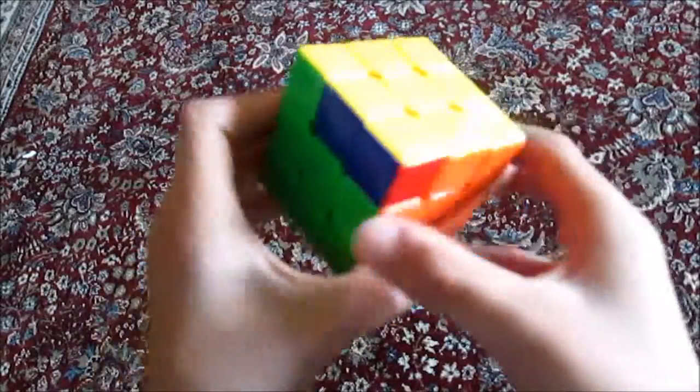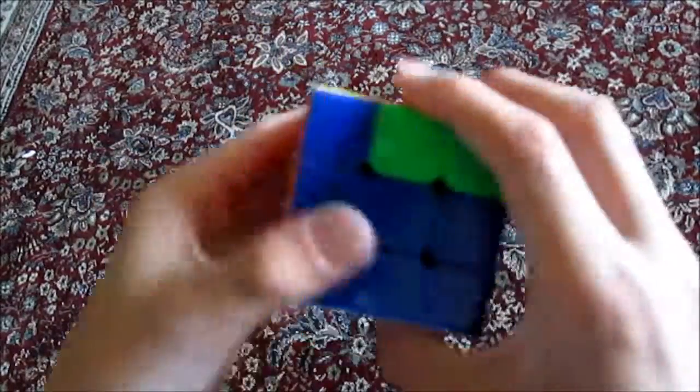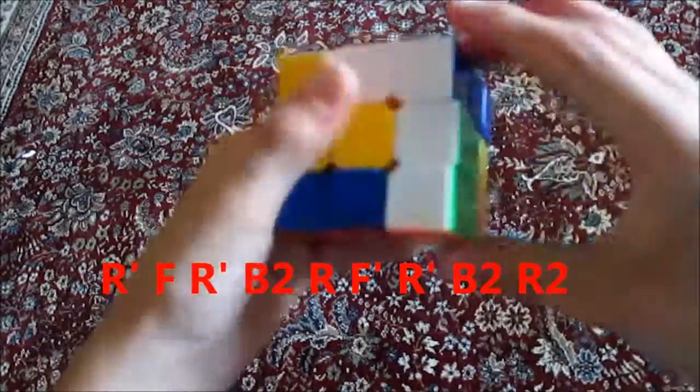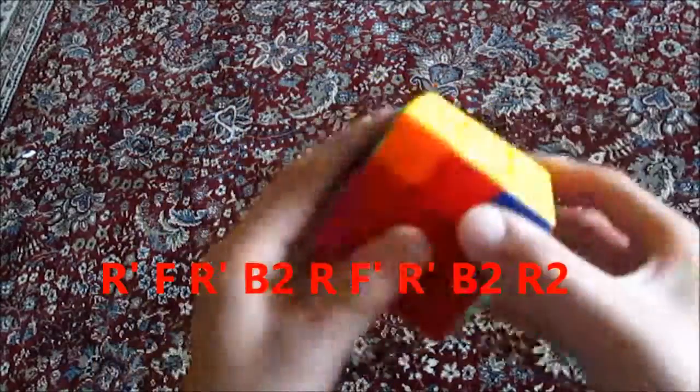All right guys, here's another case you might have. This is the case where you just have no headlights. And all you have to do is you can hold it in any position and then you just do your algorithm: R', front, Right 2. So you do your algorithm R', front R', back 2, Right 2.